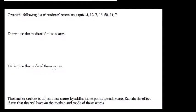Given the following list of scores, determine the median and the mode. The mode is something that repeats the most, which in this case is 7.